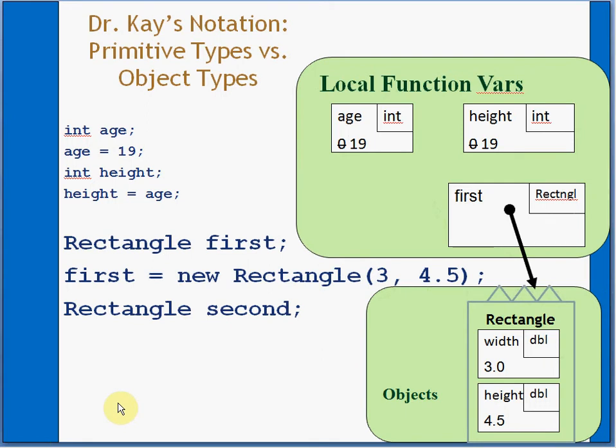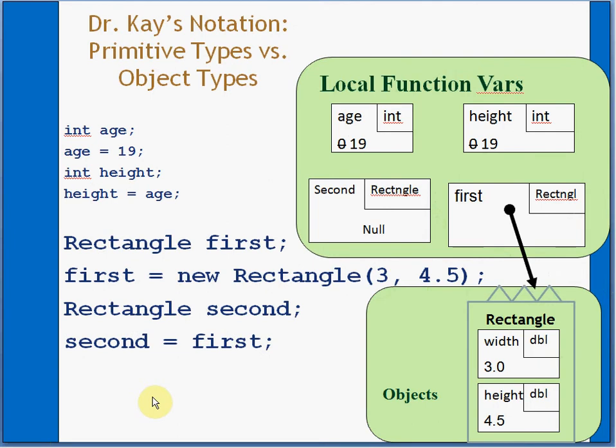Now it says rectangle second. There you go with null. Second gets first. Okay, well, what's inside of first? Inside of first is an arrow that points to here. So into second, we're going to put an arrow that points to the same thing. And as long as it points to this particular rectangle object, it doesn't matter what's pointing to the top or the side. It's all the same.